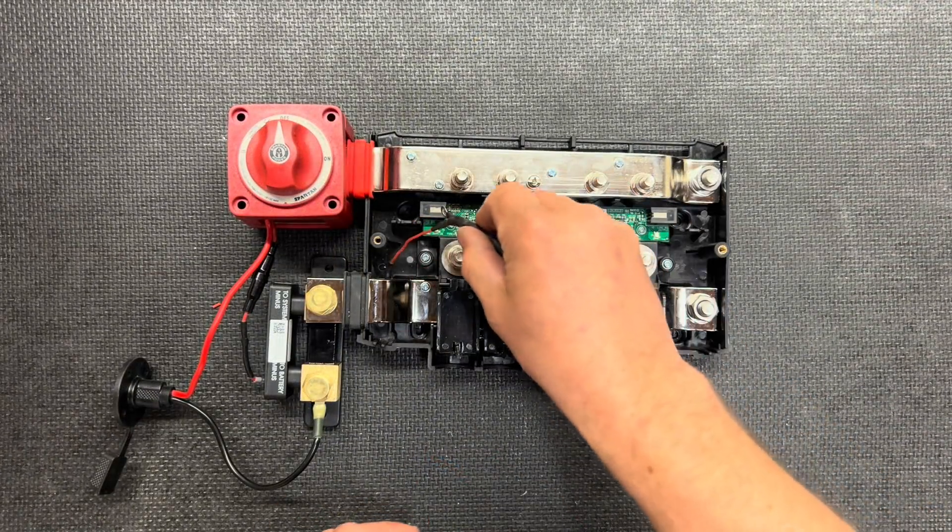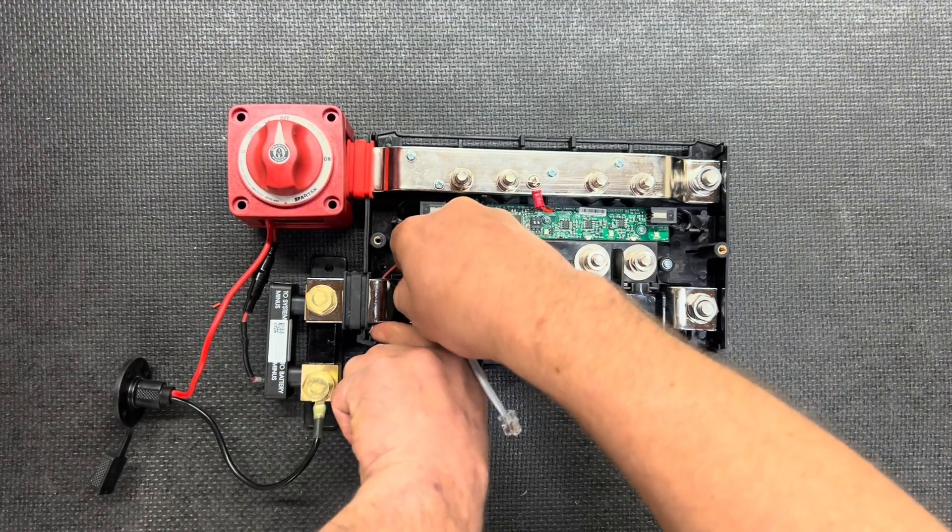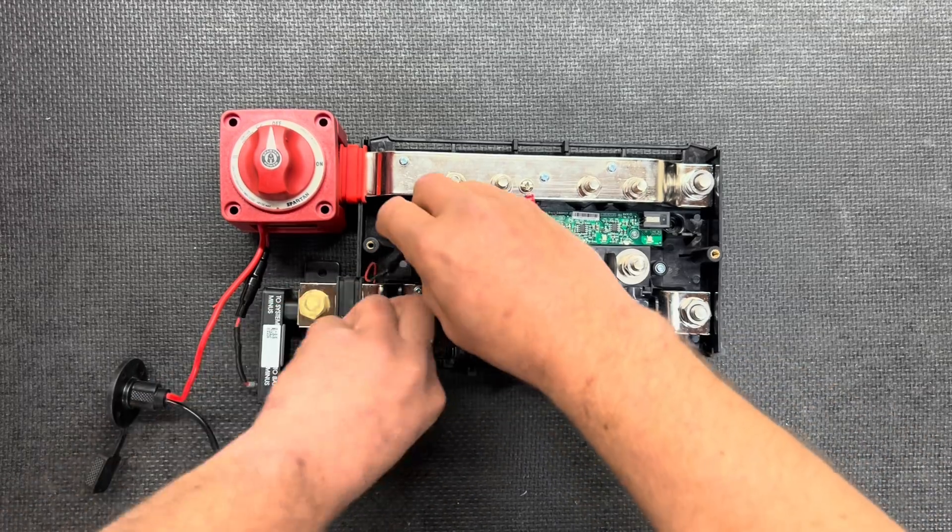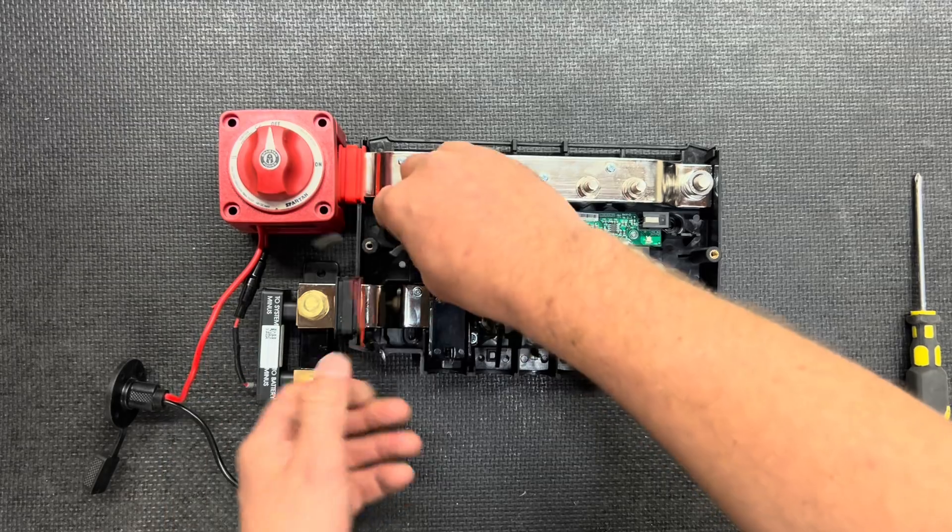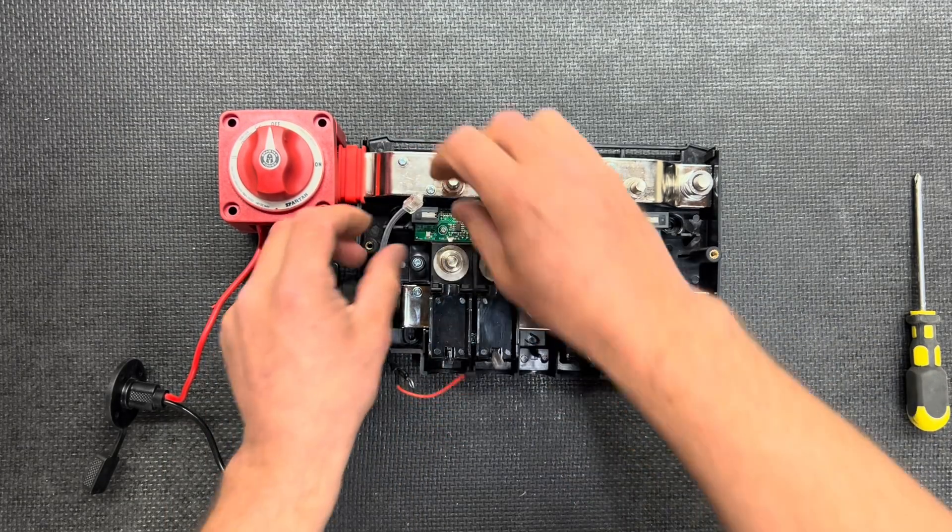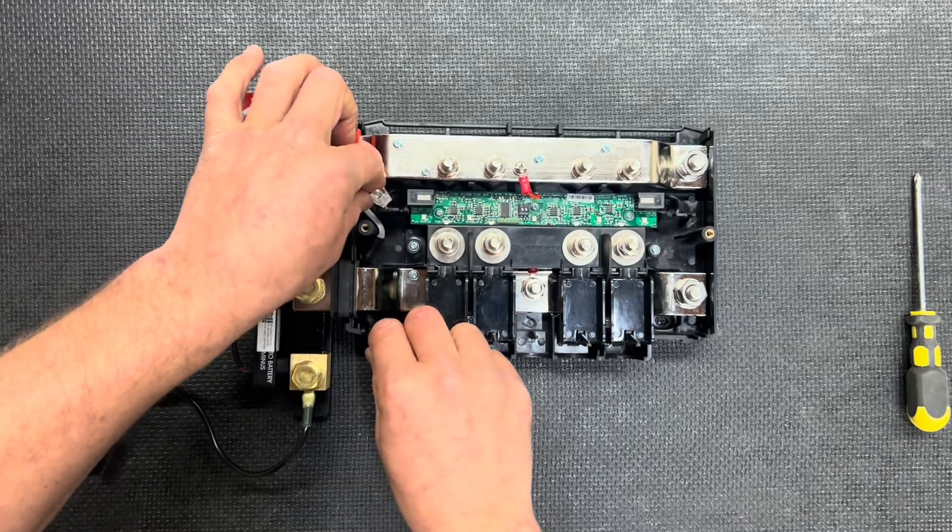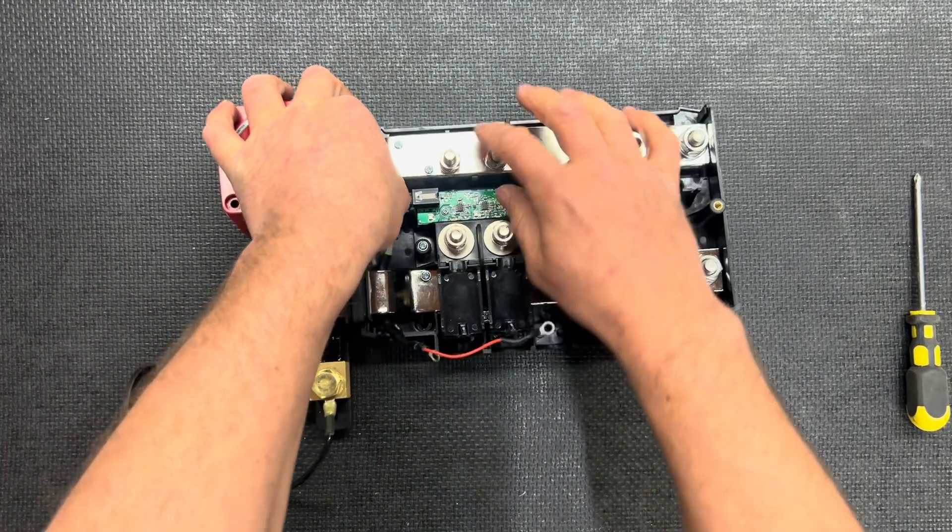With the cover off the lynx distributor, we're going to route this wire up and underneath here and we're going to plug this side in to the port that's on the left side.